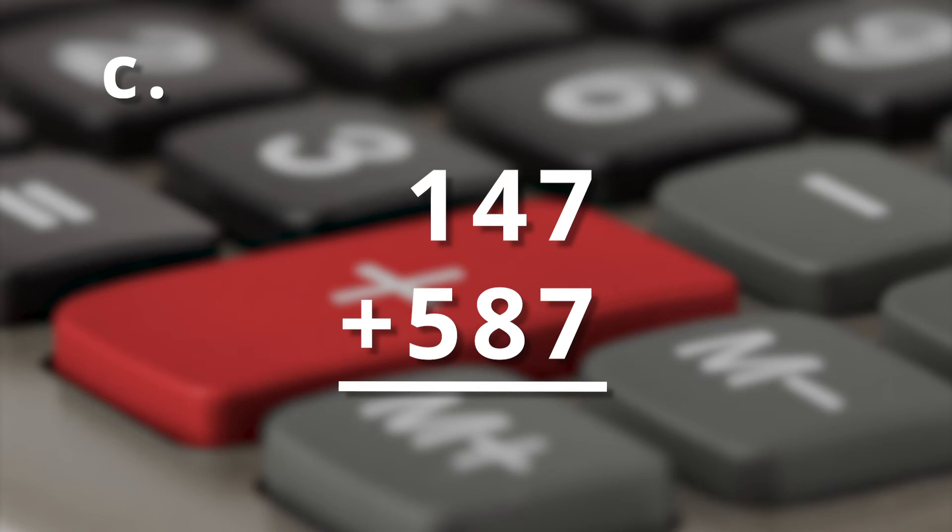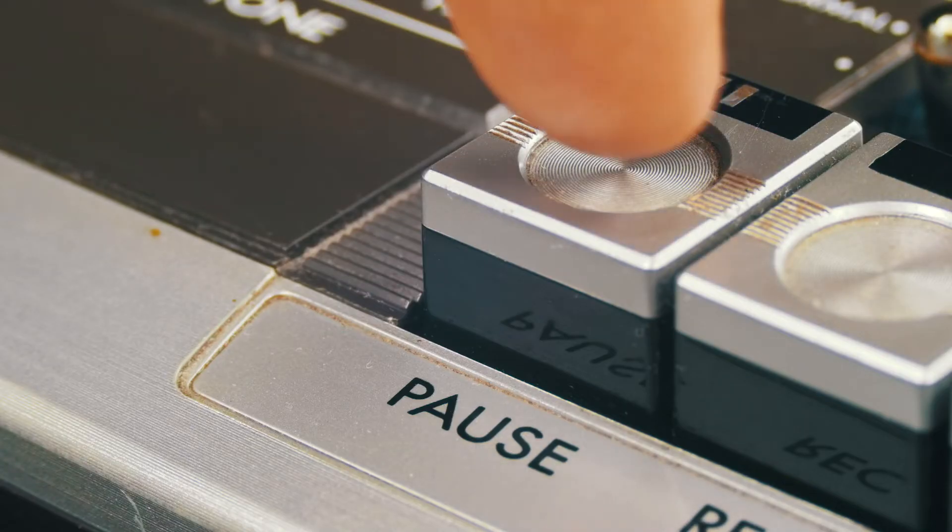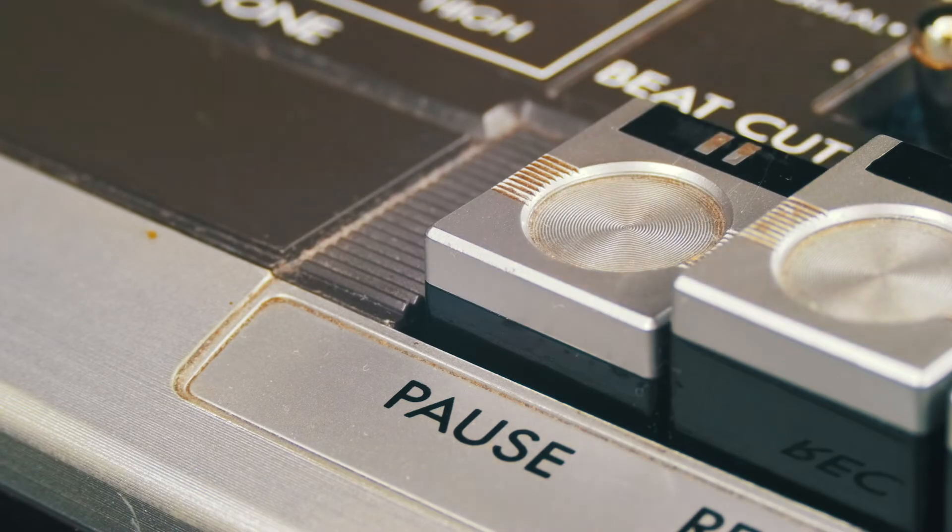Alright, let's get something a little more difficult here. Example C. A hundred and forty-seven plus five hundred and eighty-seven. I'm going to give you a minute to see if you can figure this one out for yourself. So go ahead and pause the video and see if you can get this one on your own.